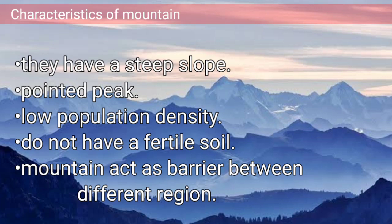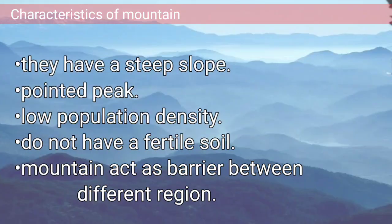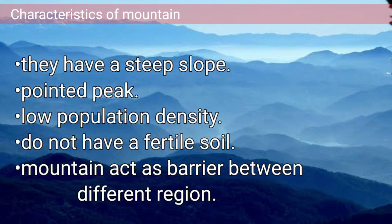However, there are prominent characteristics of mountains. They have a very steep slope and the peaks are very pointed. The population density in the mountains is very low because transportation facilities are not much available and they do not have fertile soil, which does not encourage agriculture. Because of that, the population is very low in mountainous areas. Mountains also act as a barrier between different regions — for example, the Himalayas between China and India.